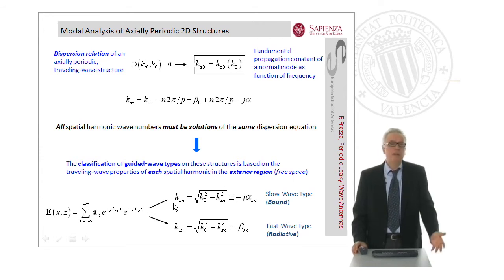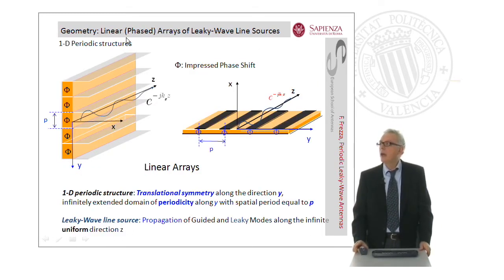If, for the reference system we employed, K_xn is purely imaginary, we have a slow wave type harmonic, and then a bound wave. Otherwise, if K_xn is real, we have a fast wave type, and that is a radiative behavior. Now we consider some examples of geometry, in particular linear phase arrays of leaky wave line sources.